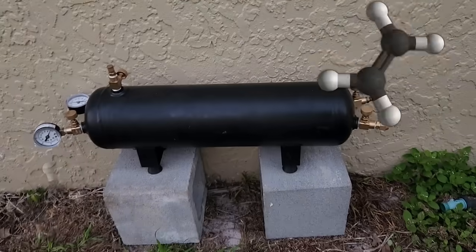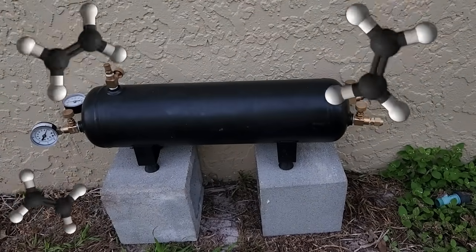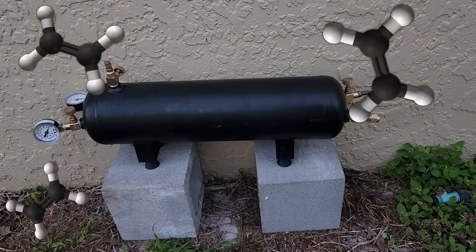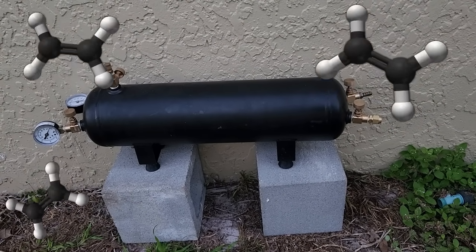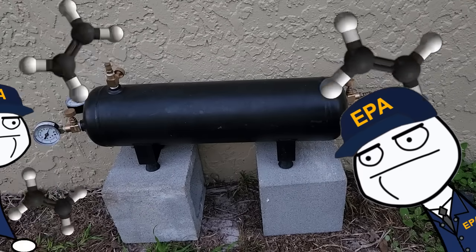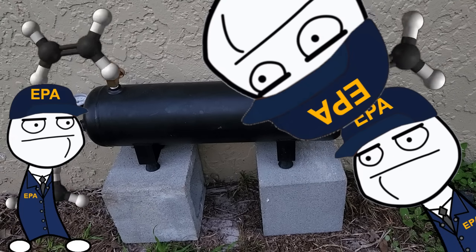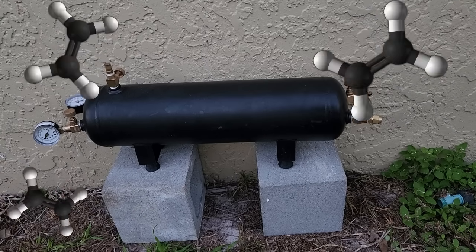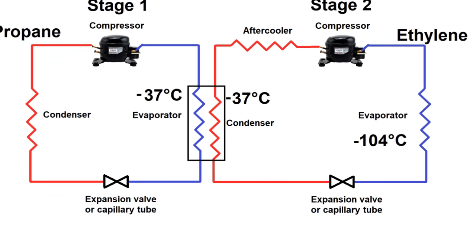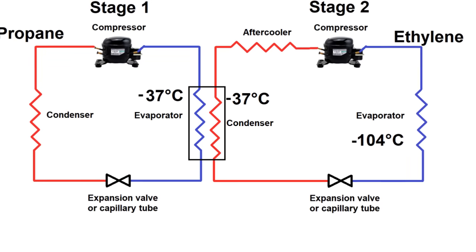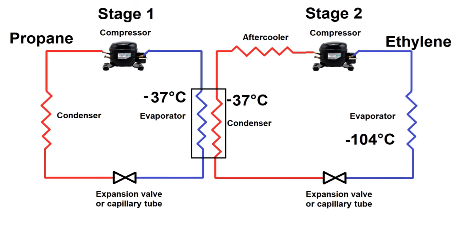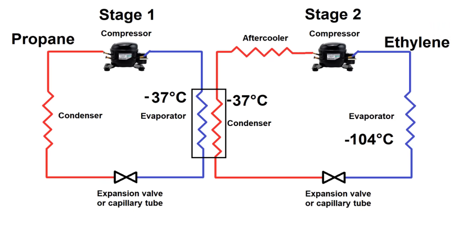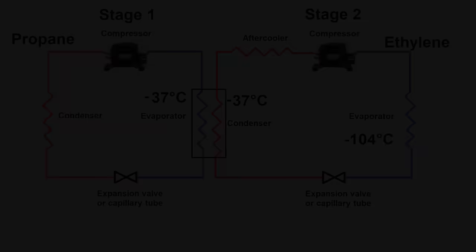Anyway, I'm now the proud owner of about 123 grams of ethylene gas and I've managed to dodge the high costs and refrigerant handling license needed to buy it as R1150. In the next video I'll be using this ethylene in the second stage of my vapor compression refrigerator to hopefully reach below minus 100°C. I'll see you in the next video if you don't want to miss the next part of this project.